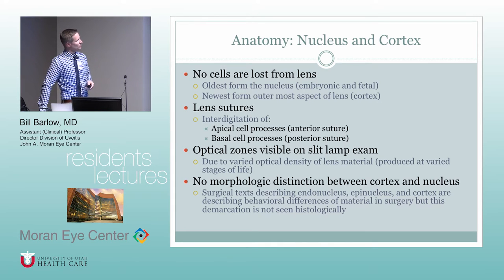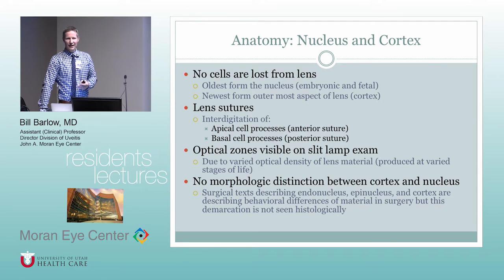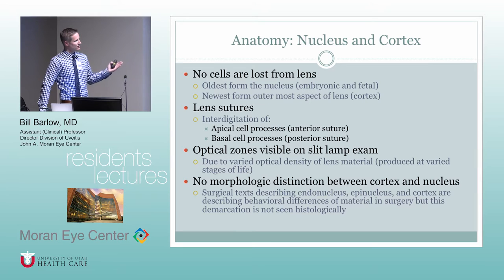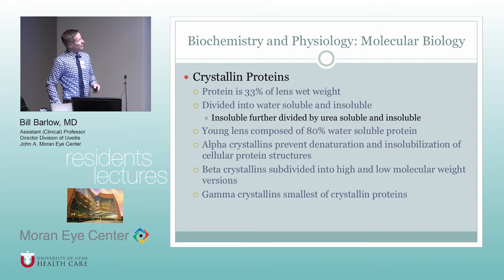With cataracts you see a similar optical delineation, except the lens is clouded to some degree. There's no morphologic distinction between the cortex and nucleus histologically — the surgical delineations we discuss don't reflect a true pathologic difference. The crystalline proteins make up much of what remains once the lens has eliminated its organelles.